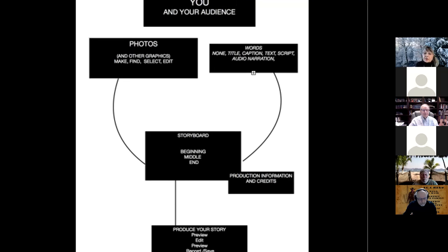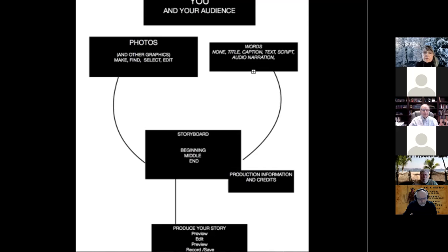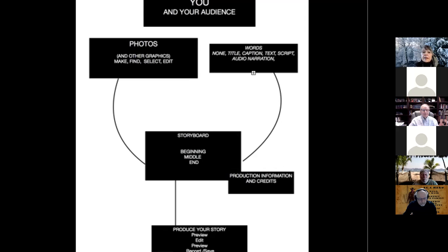Let's think about a story you might want to produce. There's you and your audience — who you choose to tell it to. You includes your motivation — why do you want to tell it. Then you have some graphics, mainly photos, but you might have maps, signs, pamphlets, or in my case a magazine with graphics. And you have words — either words you'll narrate or words that were part of a text script. Sometimes, like Norman Rockwell, you don't need any words, or you might want just a title. Then you have the storyboard where you arrange things in beginning, middle, and end. Include your production information — don't forget to give credit where credit is due.